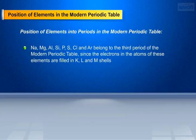Sodium, magnesium, aluminium, silicon, phosphorus, sulfur, chlorine and argon belong to the third period of the modern periodic table, since the electrons in the atoms of these elements are filled in K, L, and M shells.